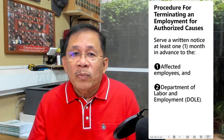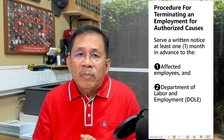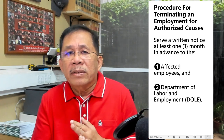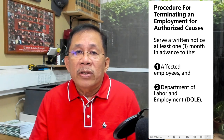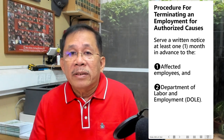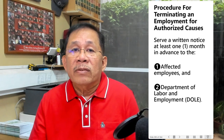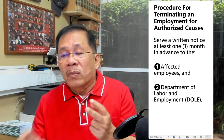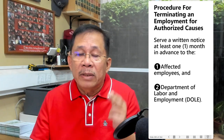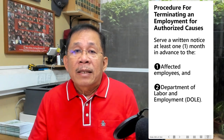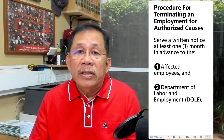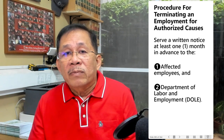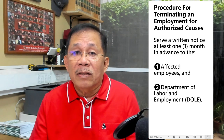We now go to the termination procedure. To terminate employment on the ground of introduction of labor-saving devices, redundancy, retrenchment, or closure of business, the employer should serve a written notice to the affected employees and to the Department of Labor one month in advance — one notice to the affected employees and another to the Department of Labor. The notice to the employees must be served personally to the employees concerned.